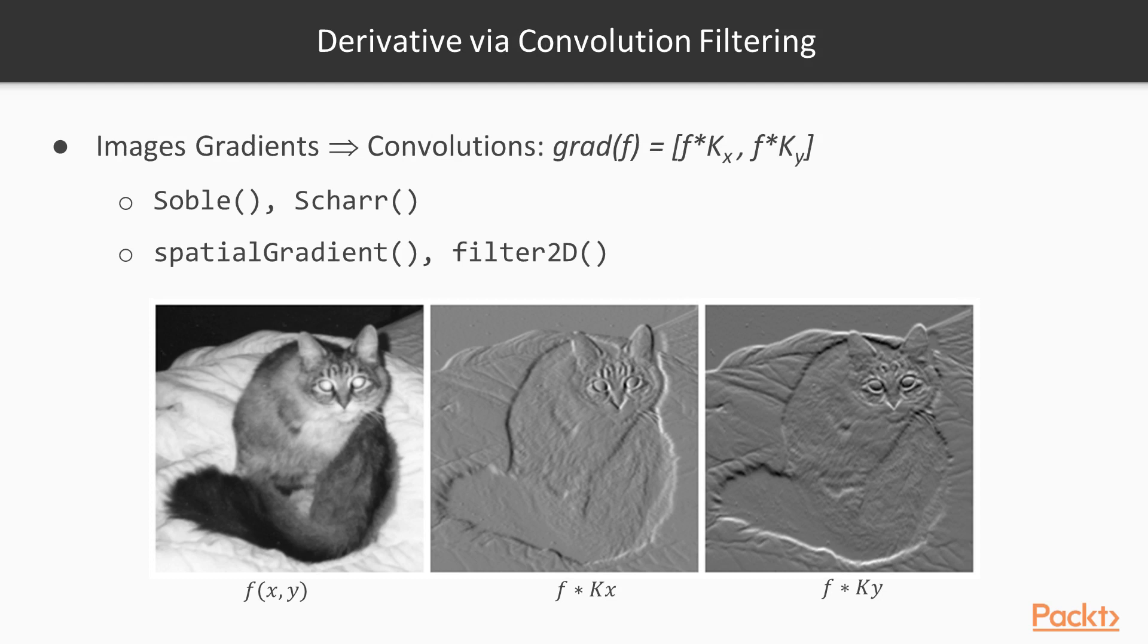Partial image derivatives can be easily calculated using convolutions. Filtering image f with the appropriate convolution filter kernels, kx and ky, will give us the two gradient images. In fact, OpenCV has several functions for doing so. Sobel and char can calculate the first, second, third, or mixed partial image derivatives using their respective convolution kernels. Spatial gradient can calculate both dx and dy simultaneously, and filter2d will let you specify custom kernels.